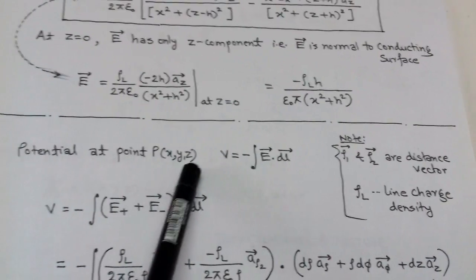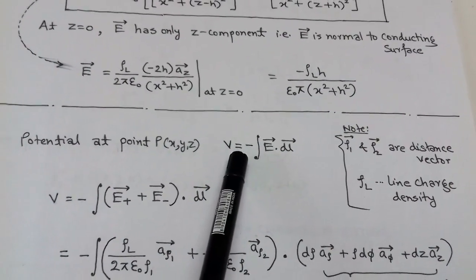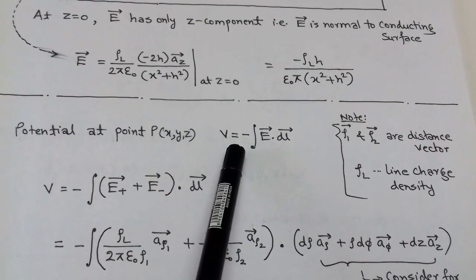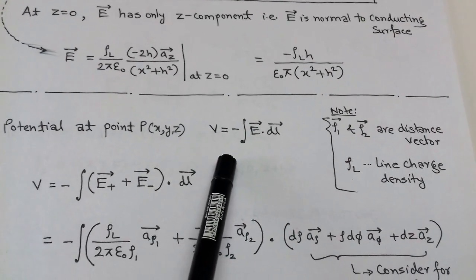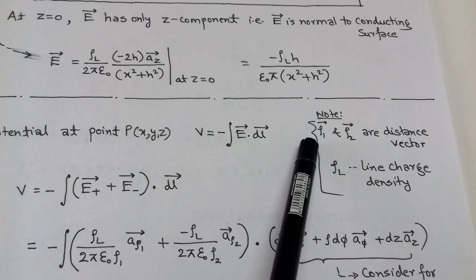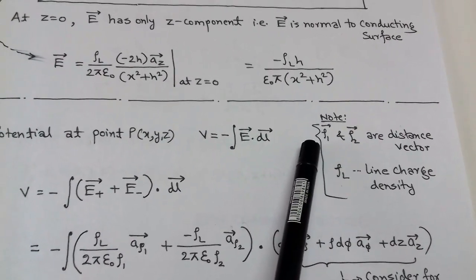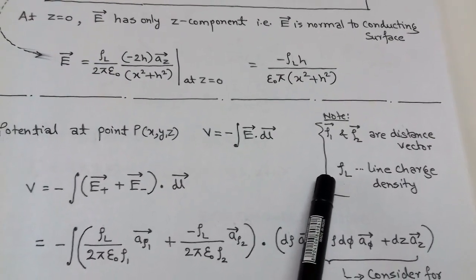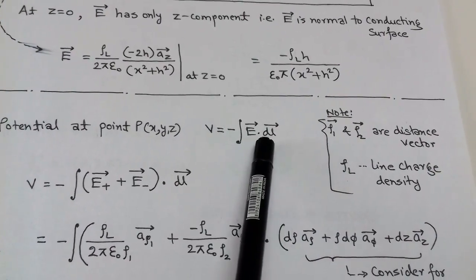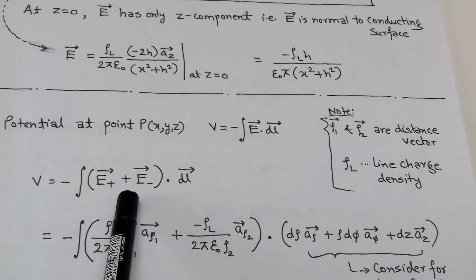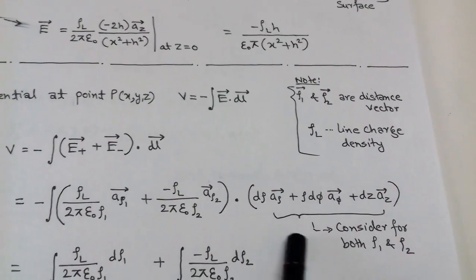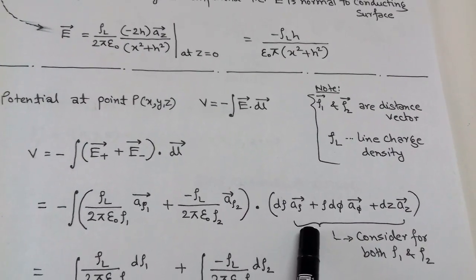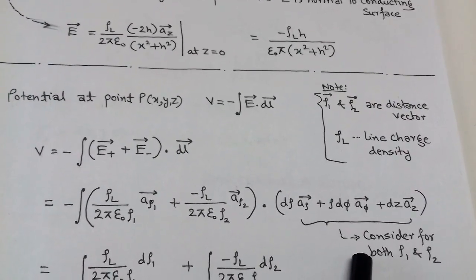With the help of electric field E, we can also determine the potential at point P. We know that V equals minus E dot dl. Here we consider a cylindrical coordinate system, which is why we use rho_1 vector and rho_2 vector. Note that rho_1 and rho_2 are distance vectors while rho_l is line charge density. In cylindrical coordinates, dl equals d*rho*a_rho plus rho*d*phi*a_phi plus dz*a_z, and this is considered for both rho_1 and rho_2.